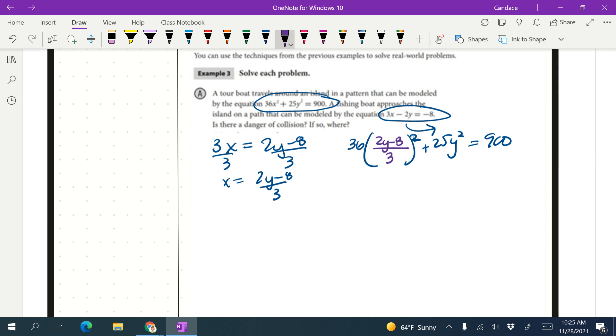Then I am going to do some squaring. So we need to square this 2y minus 8. I'm going to do that off to the side a little bit. So 2y minus 8 times 2y minus 8. We're going to foil that out.